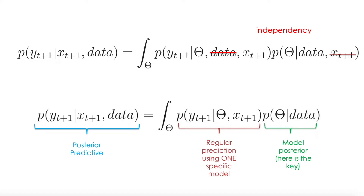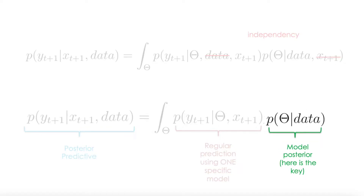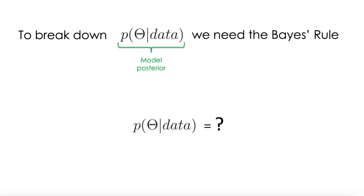Hi everyone. We will continue here with our previous equation. Now we need to figure out what the model posterior actually means and how we calculate it. To break this down, we are going to need the Bayes rule.